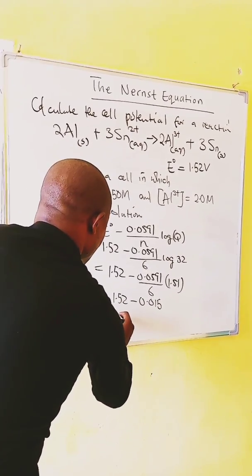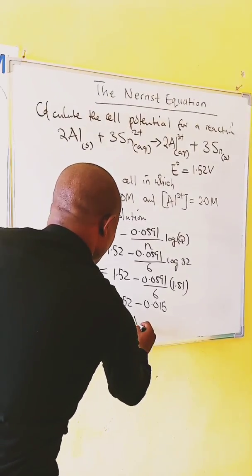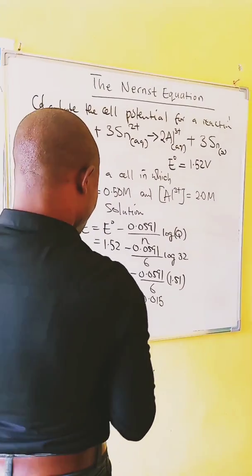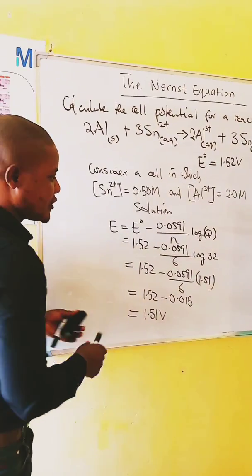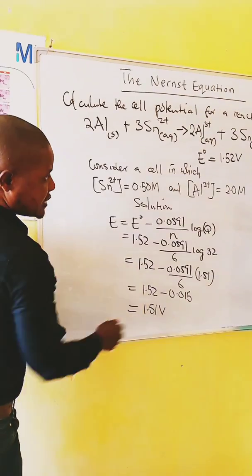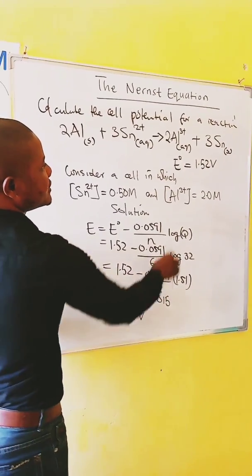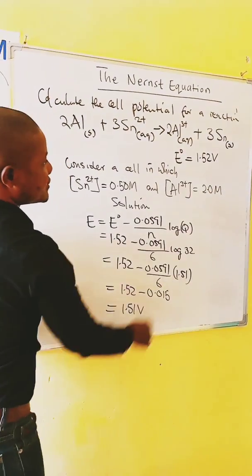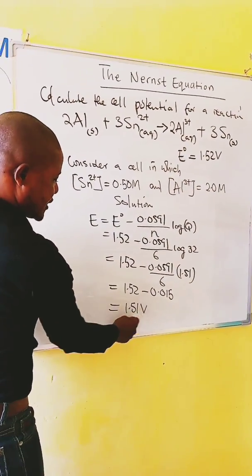This is our cell potential. Note that the cell potential has slightly reduced. The standard potential is 1.52, then the cell potential is 1.51 volts.